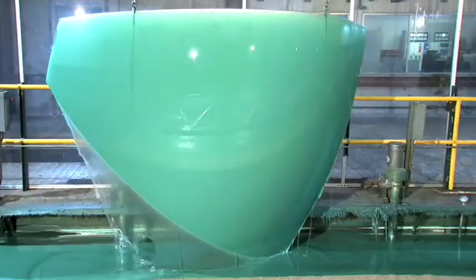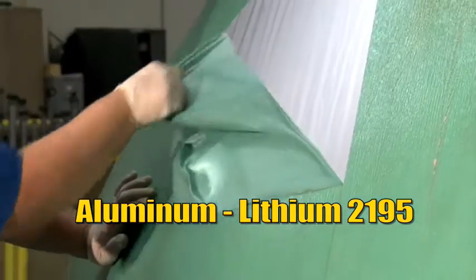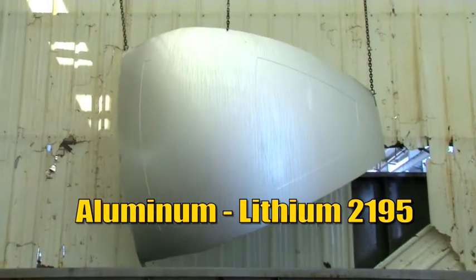The spacecraft's skin. Ares-1 shell will be made from aluminum lithium-2195, which is very strong and very light.